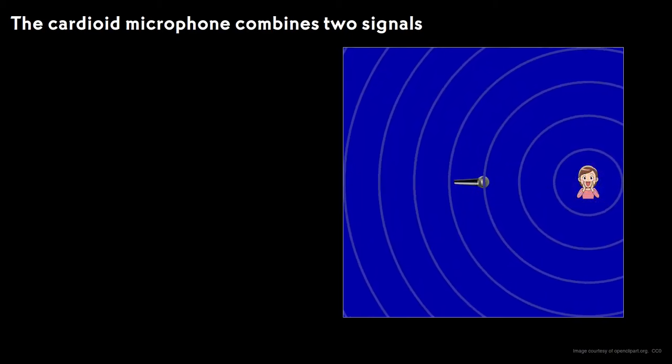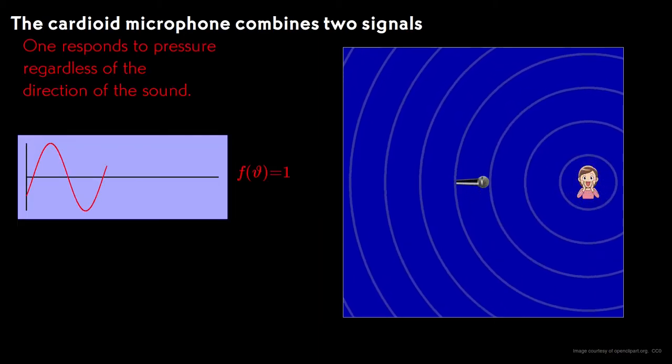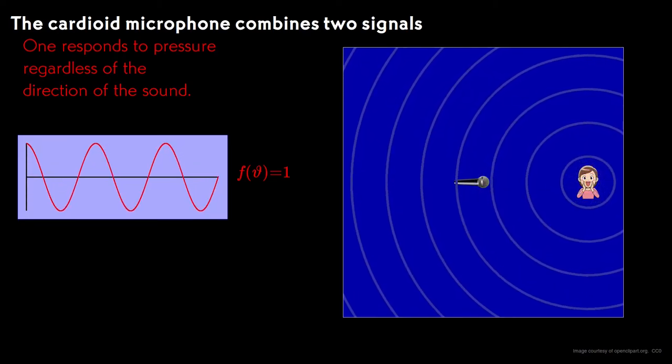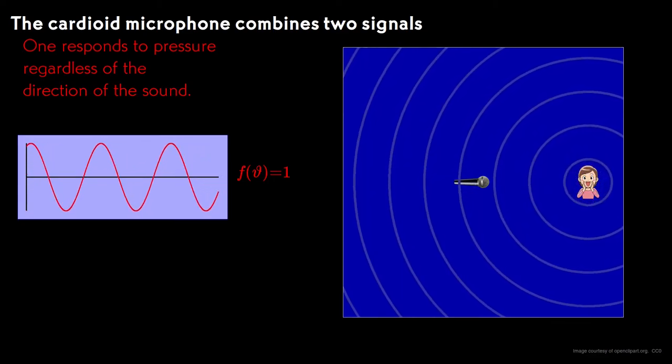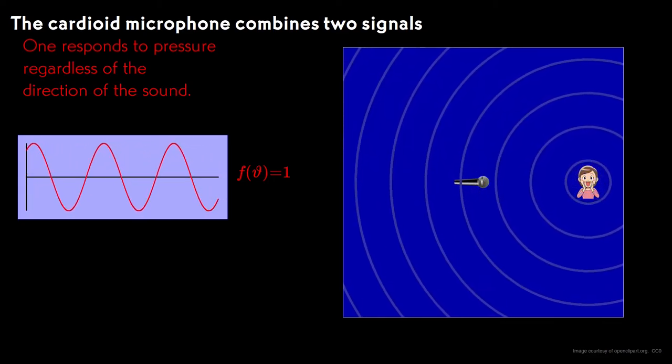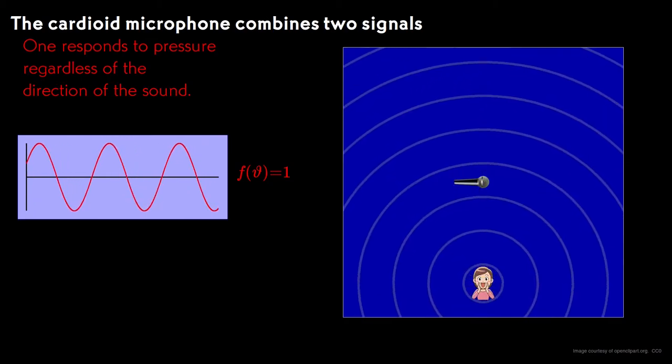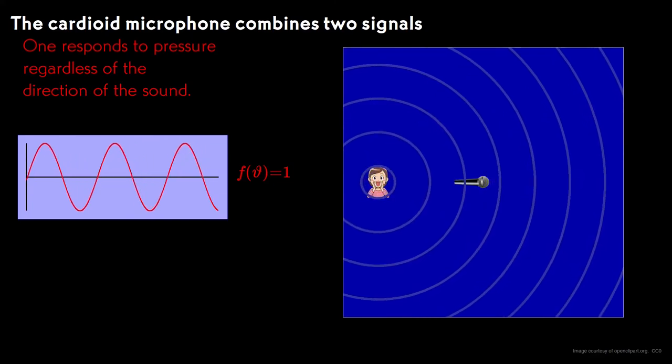The mic typically has elements that respond in two ways to the incoming sound. One response isn't sensitive to direction at all. It responds simply to pressure. A high pressure gives a peak, and a low pressure gives a trough, regardless of whether the sound is in front, or off to one side, or in the back.